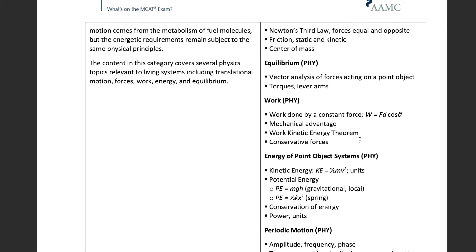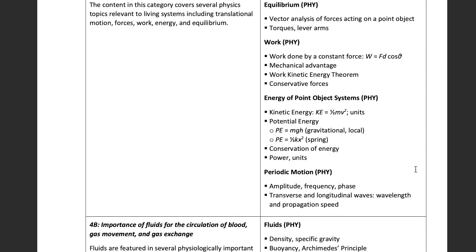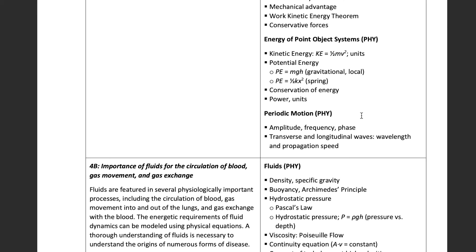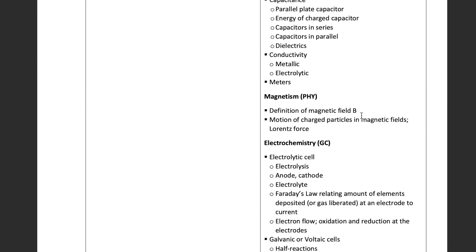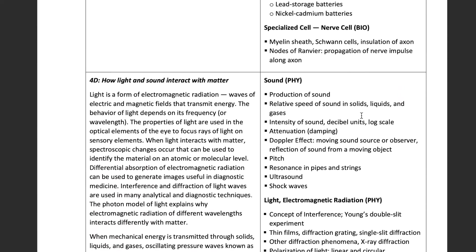Equations in the right-hand column are ones we definitely want to have memorized. For example, work done by a constant force: W equals Fd cosine of theta. Kinetic energy: KE equals one-half mv squared. Things we definitely want to have memorized. This is all really good stuff.